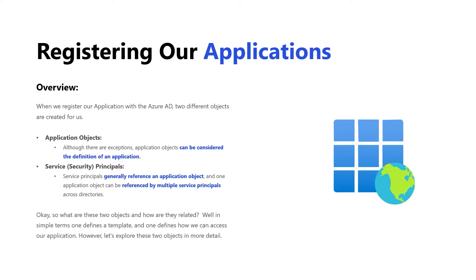What does that look like in a sense? Well, I have one application, but I want multiple people to access that particular application. So you have multiple people talking to your application object — it can be referenced by multiple people. A single user can access that application, but multiple people can access that same application. Additionally, to create a service principle, we can do it either through registering our application, or through other tools like the Azure CLI.